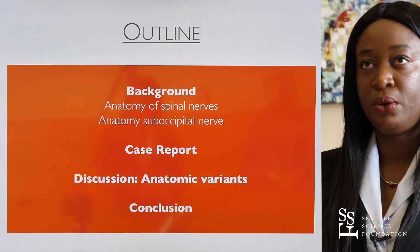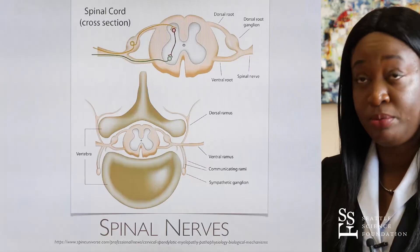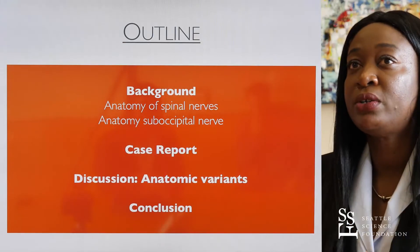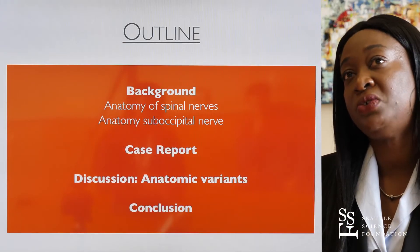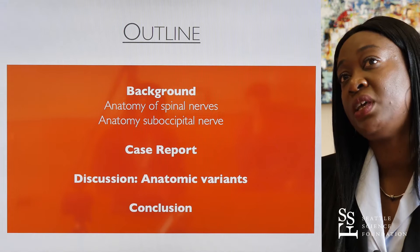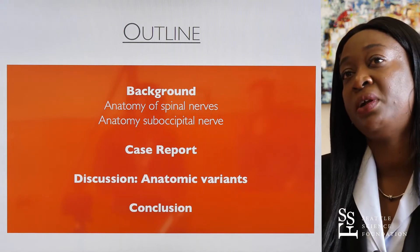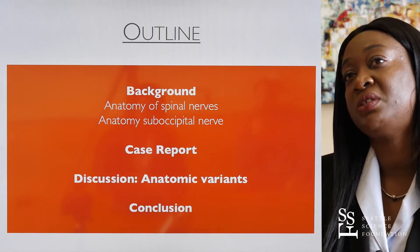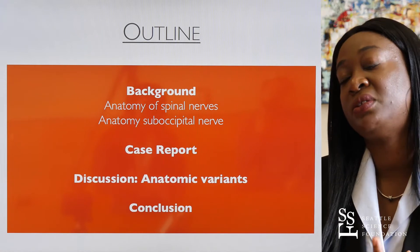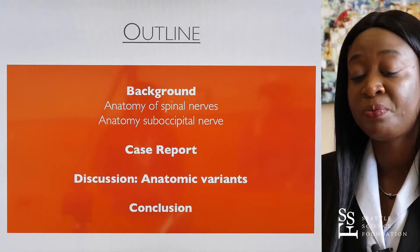The outline of the presentation will be as follows: first I'll give background information on the anatomy of spinal nerves and the suboccipital nerve, then present the case report, and then discuss the variance of the suboccipital nerve as it stands in the literature.